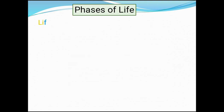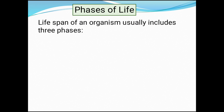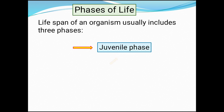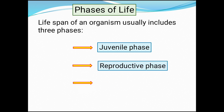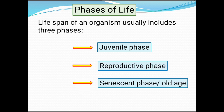Let us see the phases of life. The lifespan of an organism usually includes three phases: juvenile phase, reproductive phase, and the third one is senescent phase, or it can be called as old age.